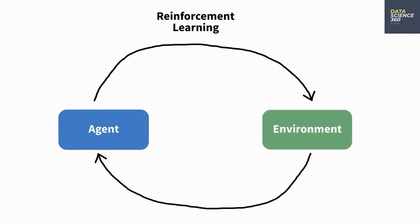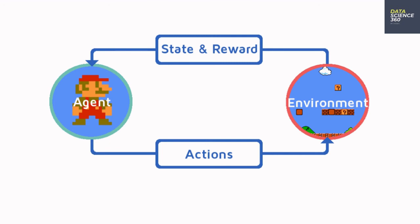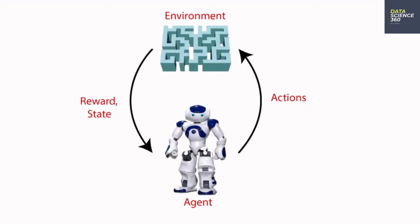Reinforcement learning. It is a way of training machine learning models to make a sequence of decisions. The computer employs trial and error to come up with a solution to the problem. The machine gets either rewards or penalties for the actions it performs. Its goal is to maximize the total reward. It's up to the model to figure out how to perform the task to maximize the reward, starting from totally random trials and finishing with sophisticated tactics and superhuman skills.